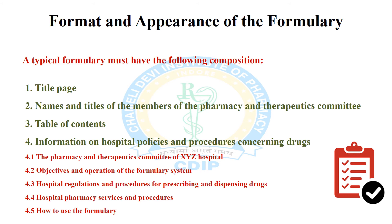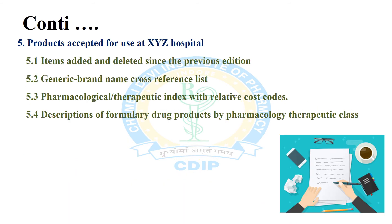Additional components include hospital pharmacy services and procedures, how to use the formulary, and product aspects for use at the hospital — including items added and deleted since the previous edition, a generic and brand names cross-reference list, a pharmacology therapeutic index with relative cost, and a description of formulary drug products by pharmacology therapeutic class.